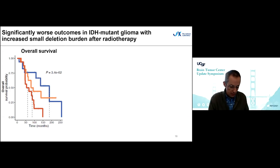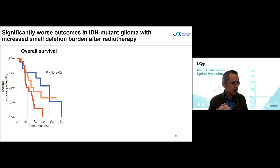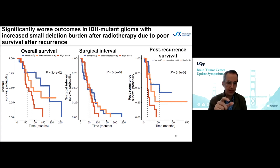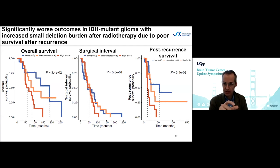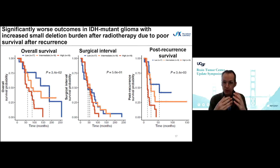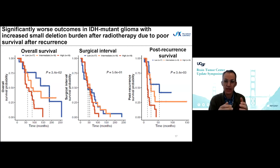We evaluated survival and observed that overall survival is worse in cases where we see an increase in small deletion burden compared to cases that do not show a post-radiation increase. When we looked in more detail — as we also did for hypermutation — the surgical interval is actually not significantly different; it's entirely due to worse post-recurrence outcomes. So we speculate that a small deletion burden increase post-radiation is a reflection of lack of sensitivity to radiation after that.